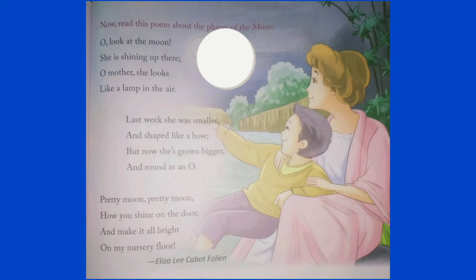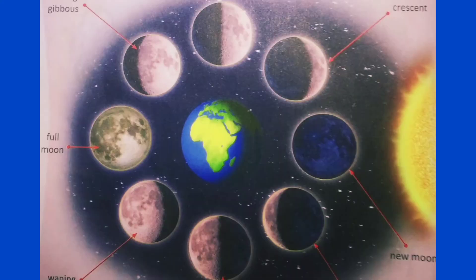In this poem we are going to learn about the faces of the moon. That means, as the moon travels around the earth, different parts of the moon are lit up by the sun. These are called faces of the moon.